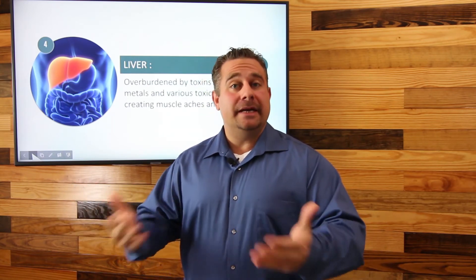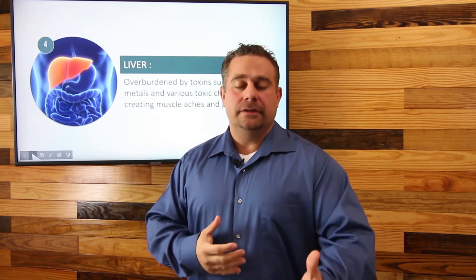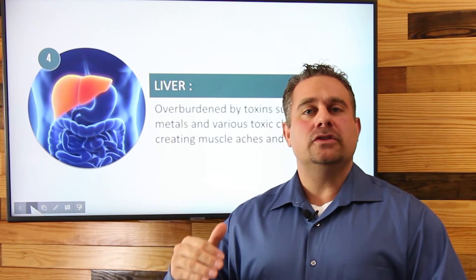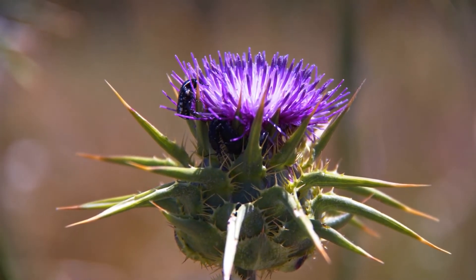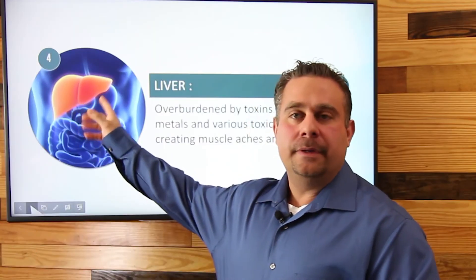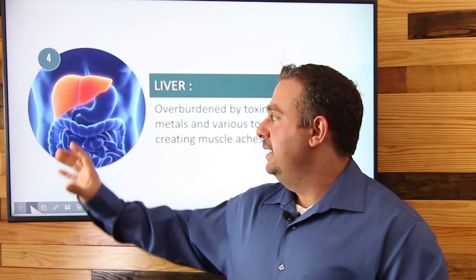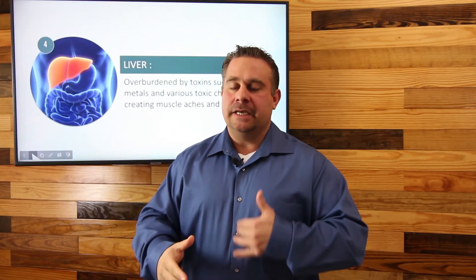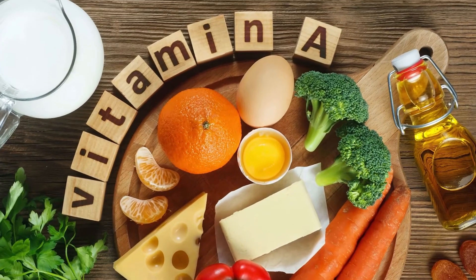To support liver function, number one, minimize toxins and heavy metals. We can also support the liver with herbs like rosemary and milk thistle — milk thistle is a phenomenal herb that can even help repair liver tissue. We can take supplements such as N-acetylcysteine, which is a precursor to glutathione, an integral part of the detoxification process. Glutathione is the most abundant amino acid combination in the body and the most important antioxidant for clearing toxins. Vitamin A is also excellent for the liver, though you don't want to take too much.